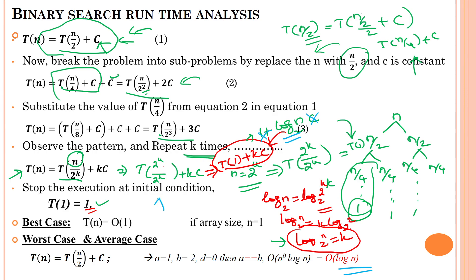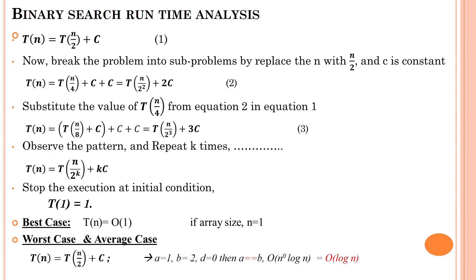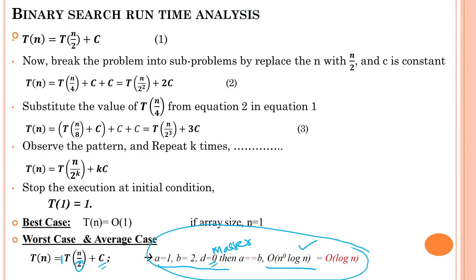This can also be confirmed using the Master Theorem: here a = 1, b = 2, and f(n) is not present so d = 0. Applying the Master Theorem gives the same time complexity. The previous derivation was based on the substitution method, and this one is based on the Master Theorem. Thanks for watching.